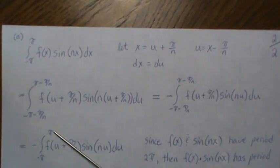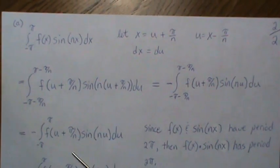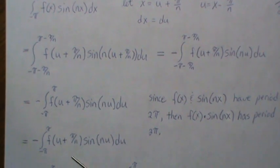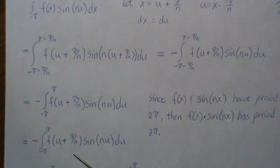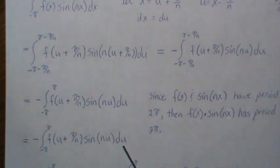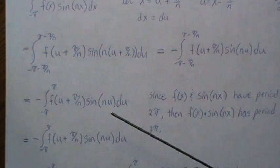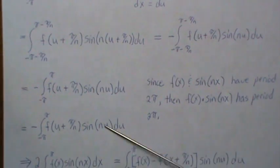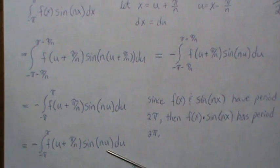Those are the same, and the u is a dummy variable so we could actually stick in x here and here, and what that says is this is equal to this.